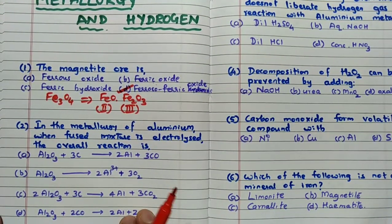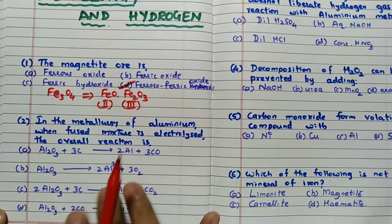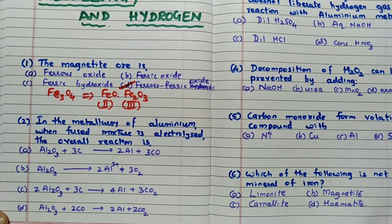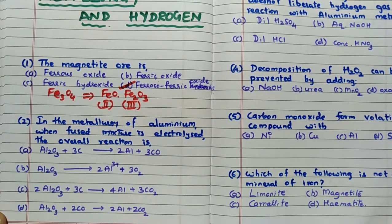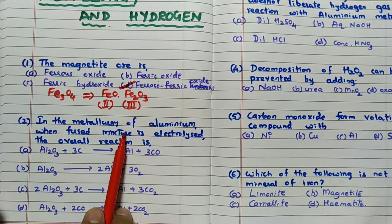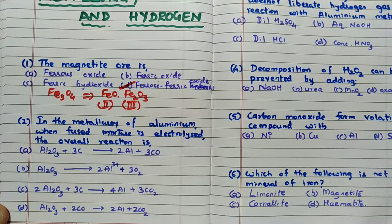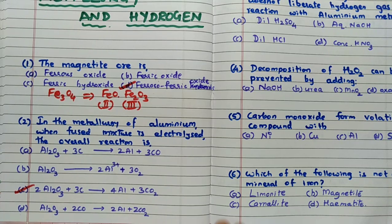Very simple question and important question up to IIT advanced level also this question was asked on Hall-Heroult process. In metallurgy of aluminum when the fused mixture is electrolyzed, the overall reaction taking place is Al2O3 plus carbon give rise to Al plus 3CO2. Answer for this question is C, 3C Al plus 3CO2.